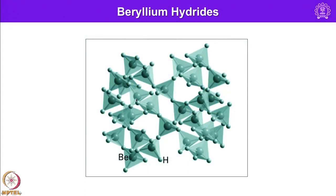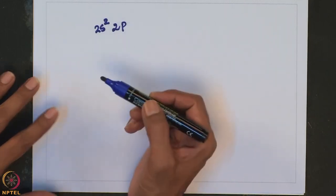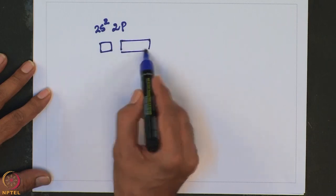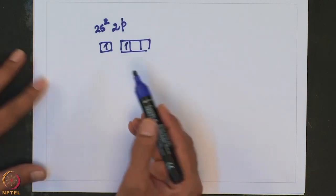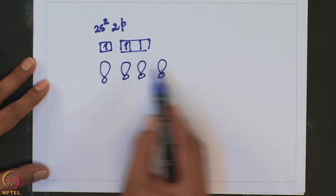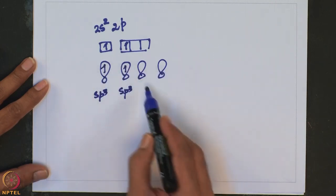The beryllium hydride structure can be explained using valence bond theory and the hybridization concept. Beryllium has a 2s2 electronic configuration, with an empty 2p orbital. Prior to hydride formation, one electron is promoted to the p orbital, giving one electron in s and one in p. The s and three p orbitals then combine to form four sp3 hybrid orbitals — two with one electron each and two with no electrons.